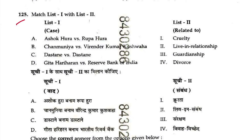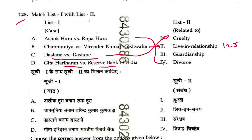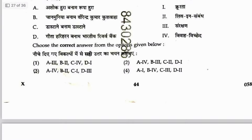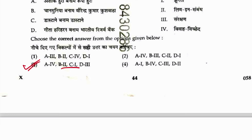Question 125: Match cases — Ashok Hurra vs. Rupa Hurra is on divorce. Chanmuniya vs. Virendra Kumar Kushwaha is on live-in relationship. Session 125 maintenance — reference. Dastane vs. Dastane is on cruelty — answer is 1. Geeta Hariharan vs. RBI is on guardianship — even mother can be natural guardian during the lifetime of father. Sequence is 4, 2, 1, 3. Answer is 3.